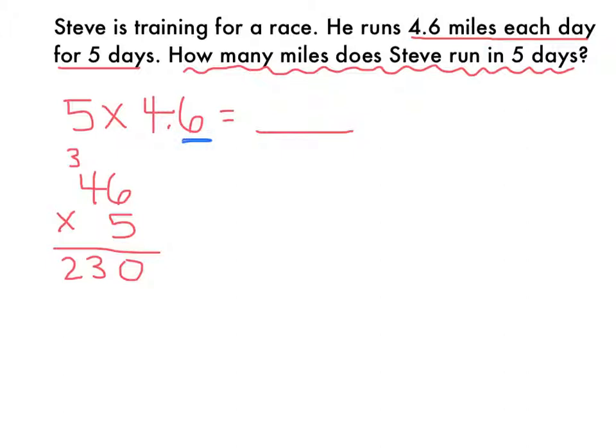There is one decimal place in my factor, which means in my answer, I need to move this decimal over to the left one place, giving me an answer of 23 miles.